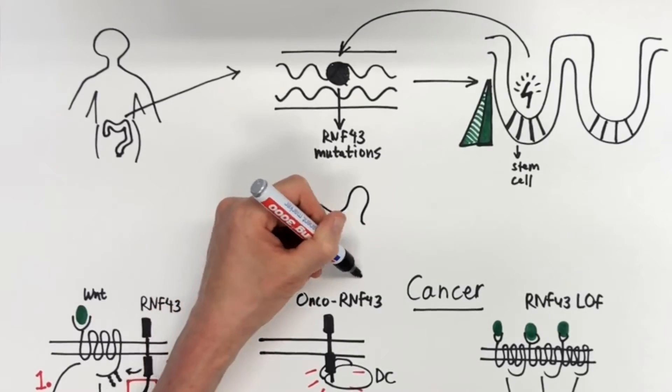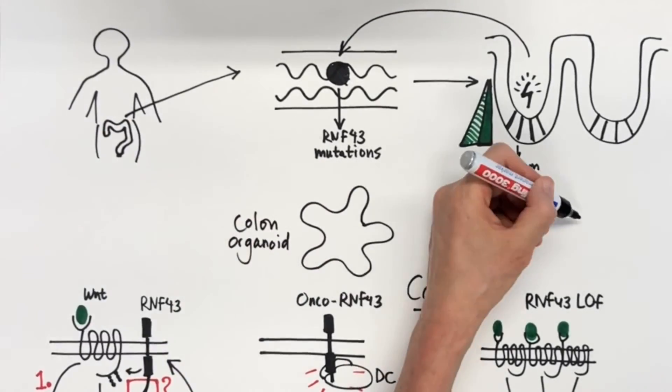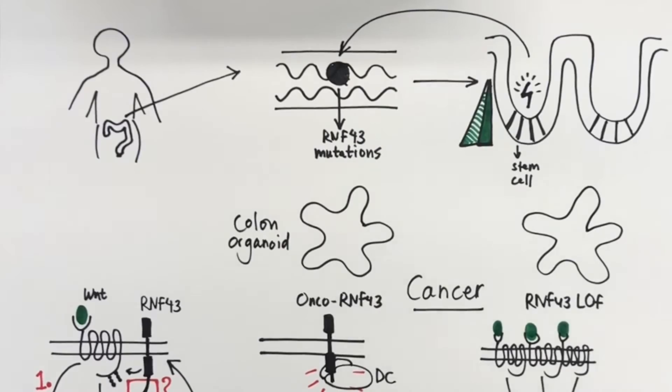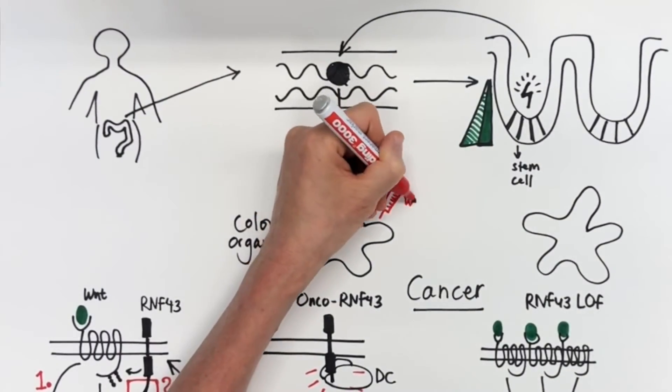We have modeled onco-RNF43 mutations in human colon organoids and confirmed their ability to drive Wnt signaling.